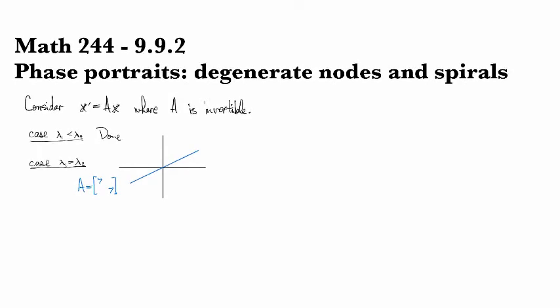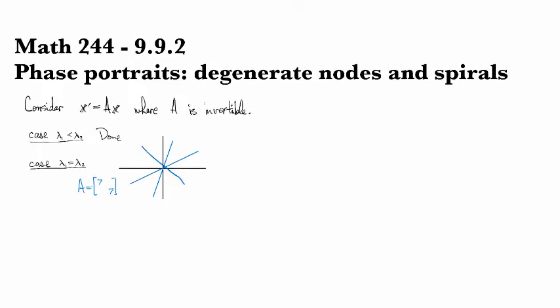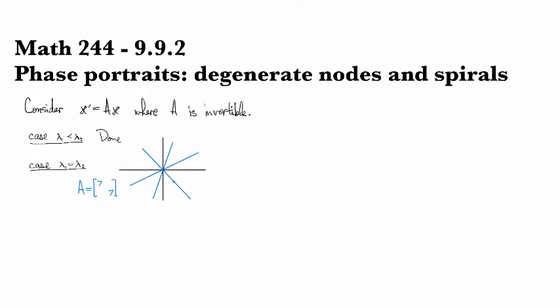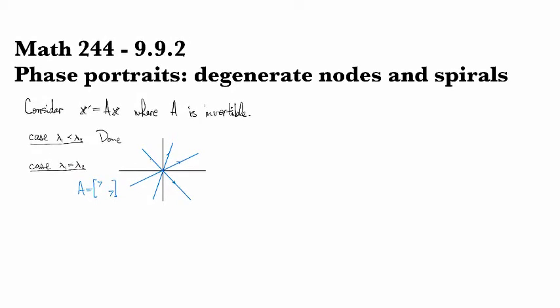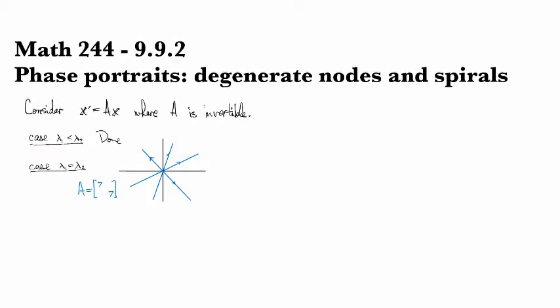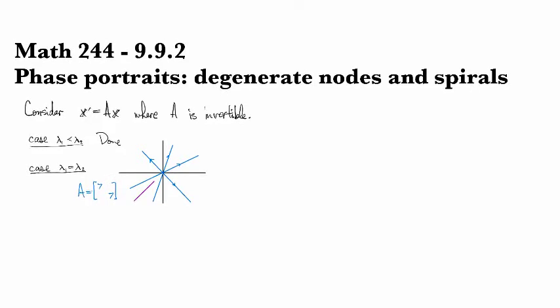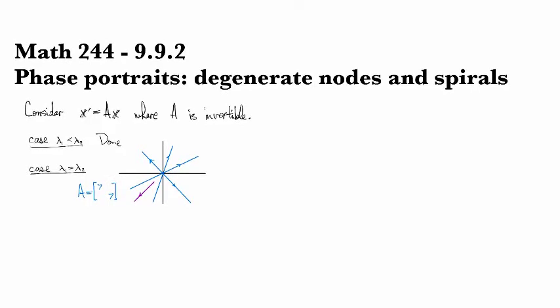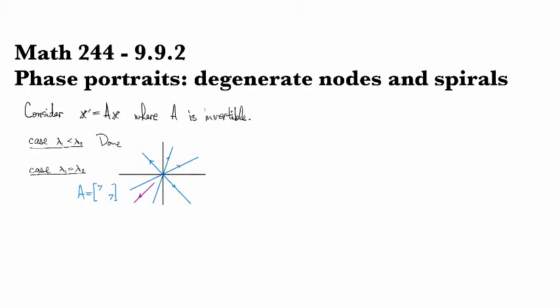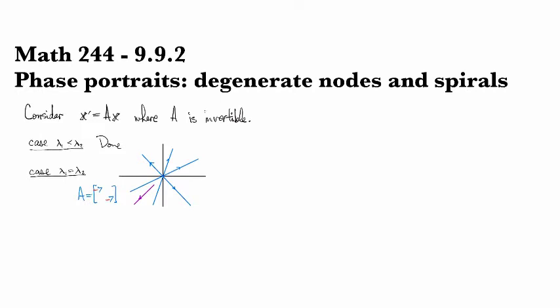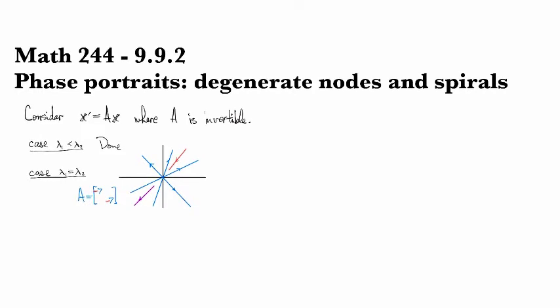In this case, it turns out that paths all just look like lines through the origin. With 7 as a positive number, everything would be going outward, and that's what trajectory, any trajectory that you choose anywhere will just look like some straight line. If you start here, it'll just go outward directly away from the origin. If these were to be negative 7s, then of course all the arrows would be reversed, and all paths would go in toward the origin.